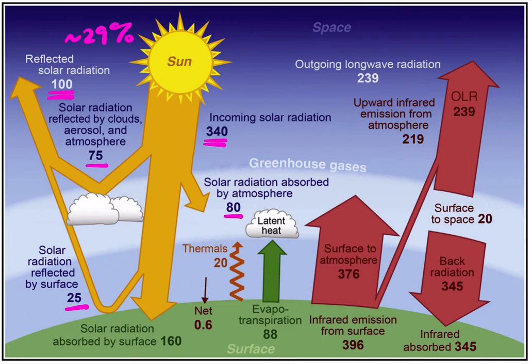80 watts per meter squared are absorbed directly in the atmosphere, and 160 watts per meter squared are absorbed by the surface. So now we know that we have 240 watts per meter squared of energy that is absorbed by the Earth's system. Where does that energy go?